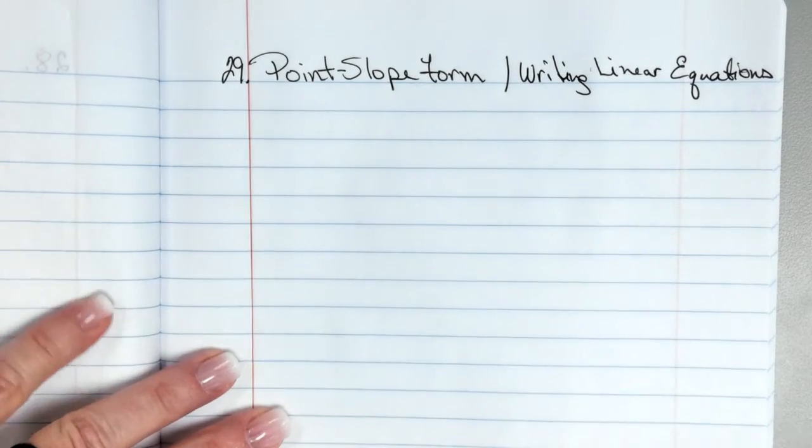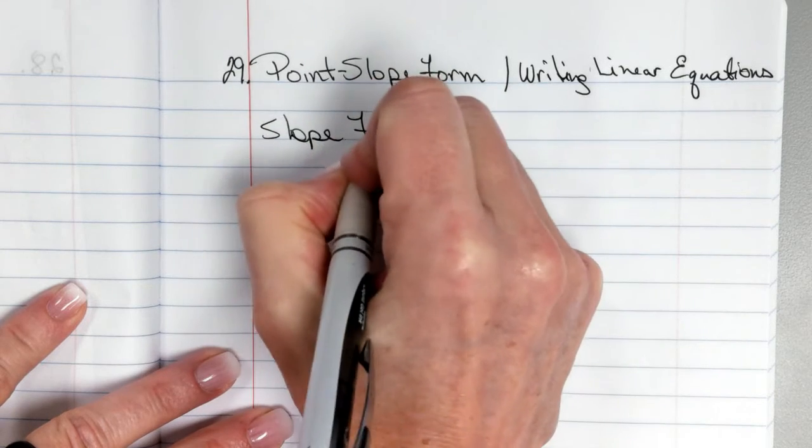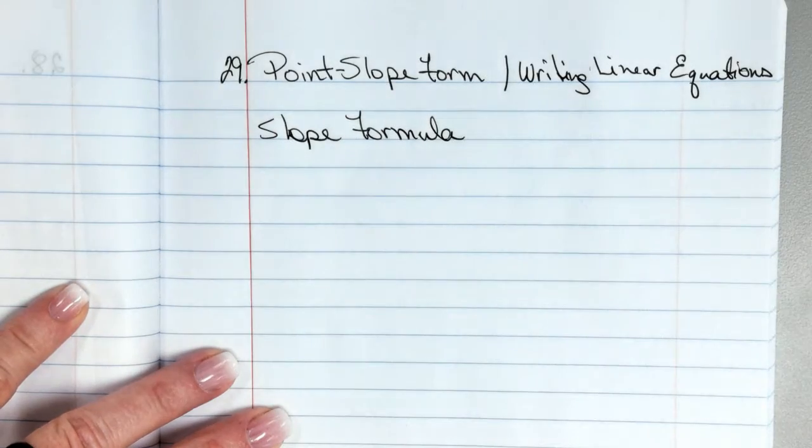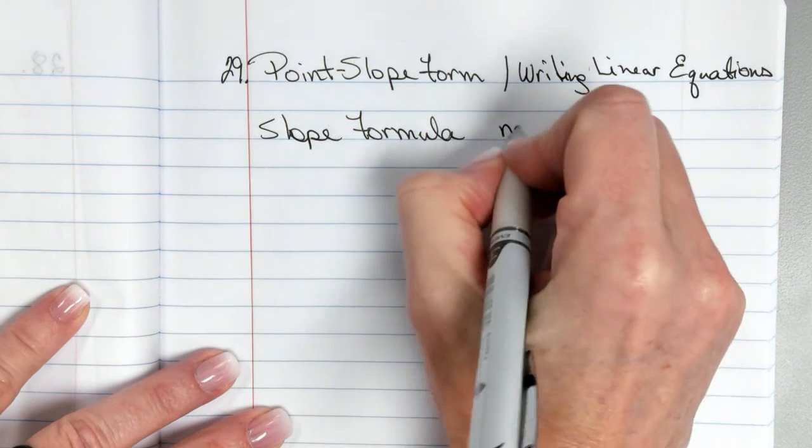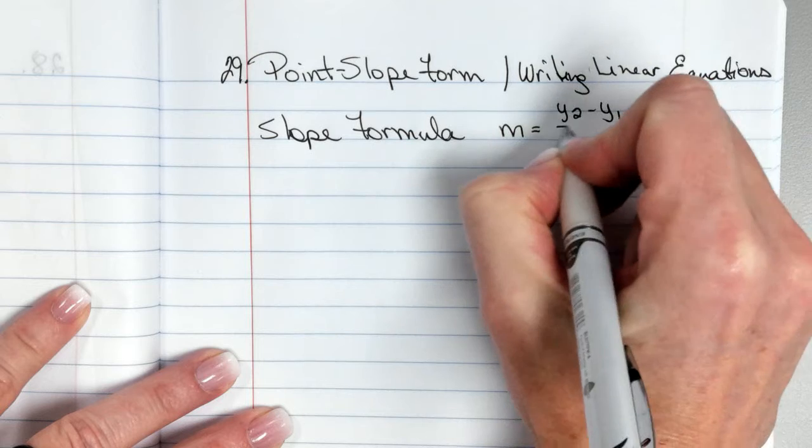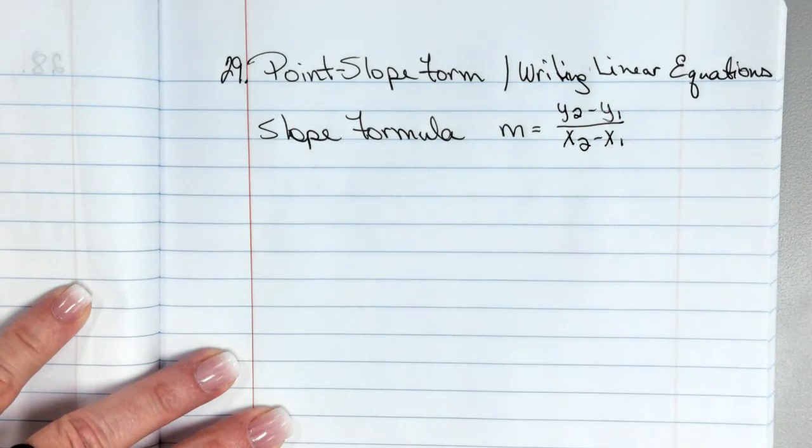All right, so let's remember, let's start here. Let's say I'm going to use our slope formula. What is that slope formula that we used? So we had m equals y2 minus y1 over x2 minus x1.